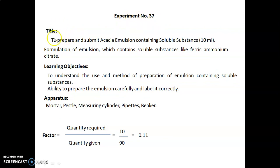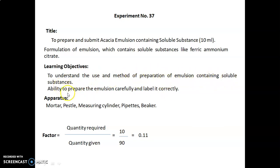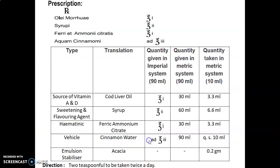Experiment number 37: title is to prepare and submit an acacia emulsion containing a soluble substance — 10 ml. The formulation contains a soluble substance like ferric ammonium citrate. Learning objectives are to understand the use and method of preparation of emulsion containing soluble substances, and the ability to prepare the emulsion carefully and label it correctly. Apparatus required: mortar, pestle, measuring cylinder, pipettes, beaker. Factor calculated: quantity required upon quantity given = 10/90 = 0.11.